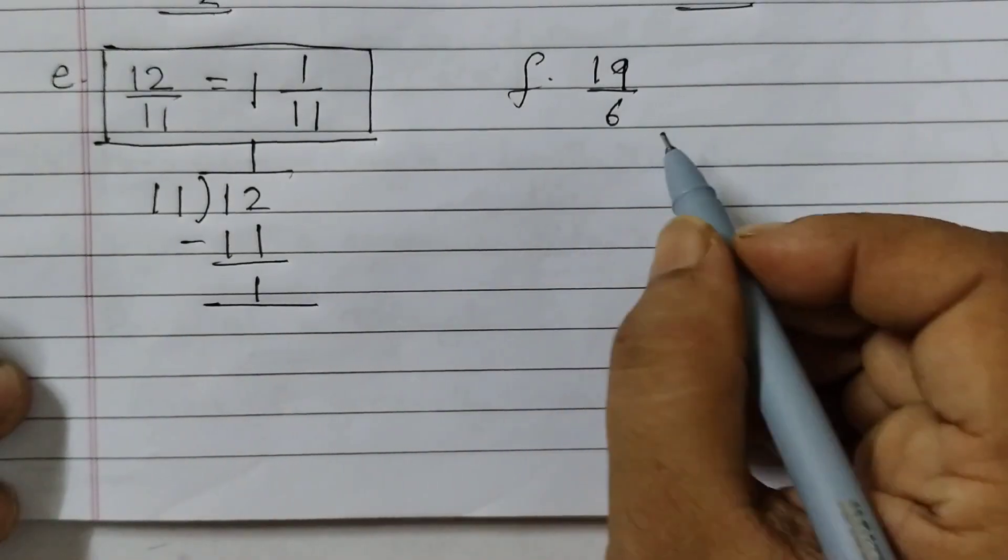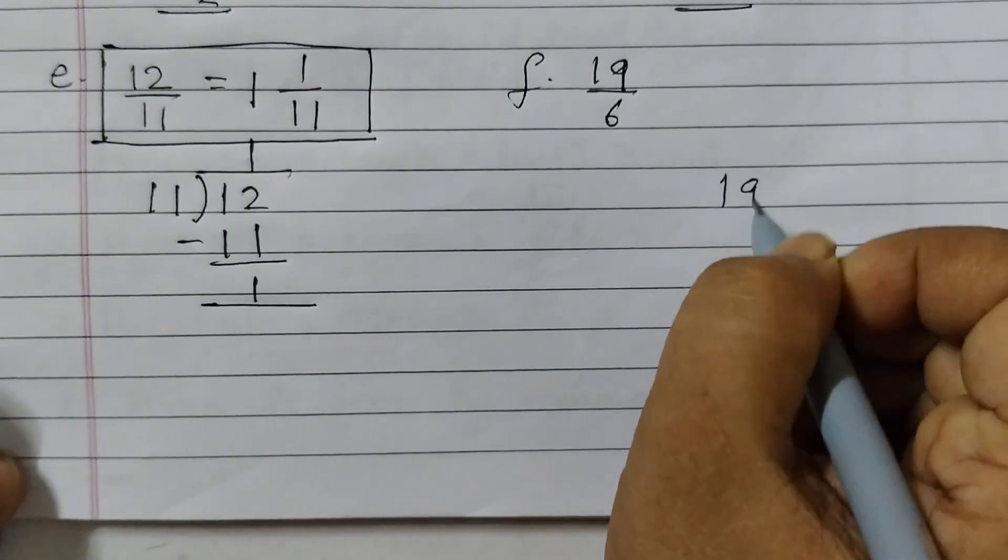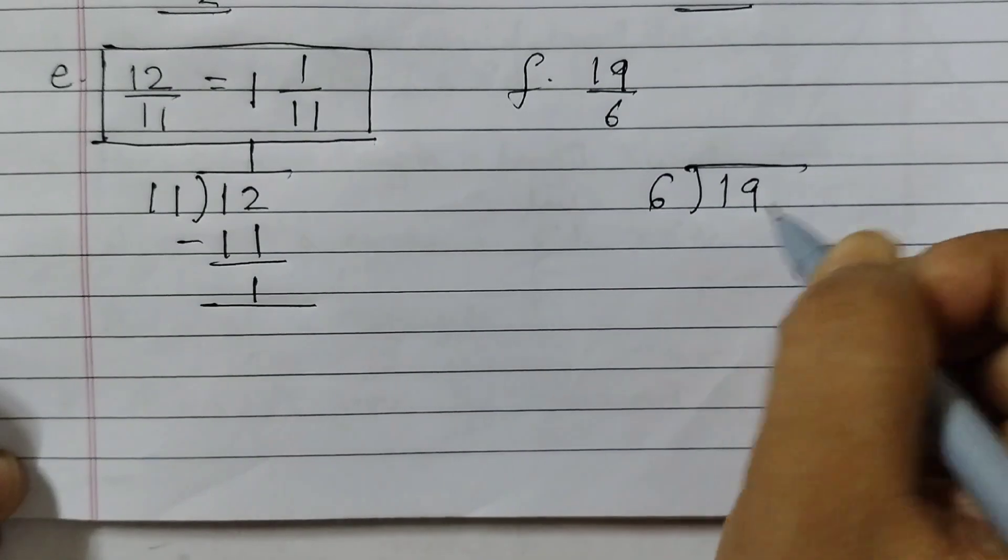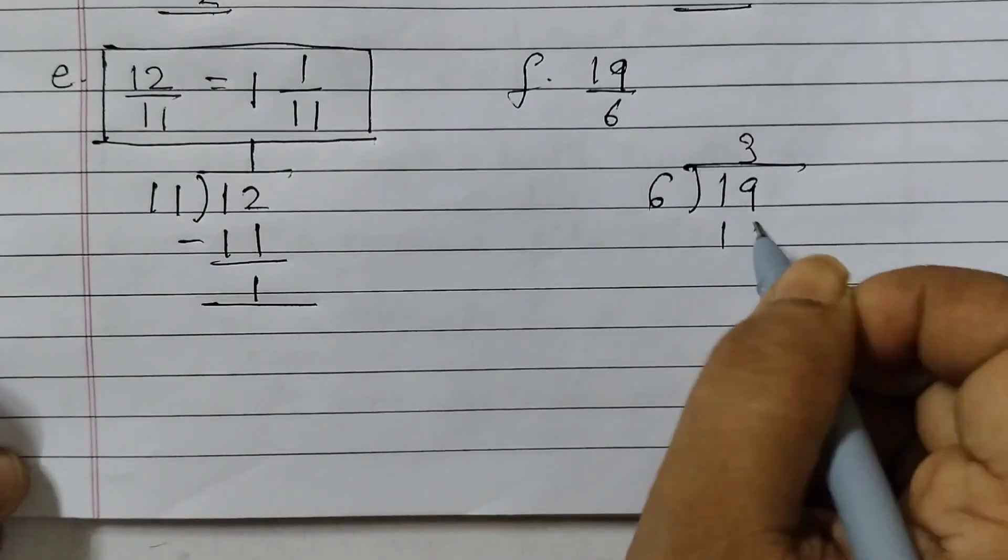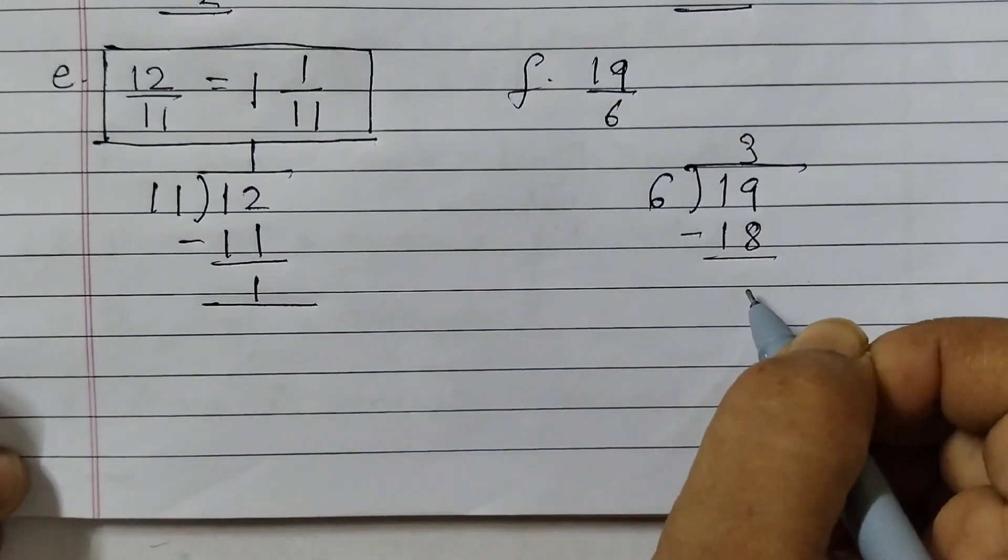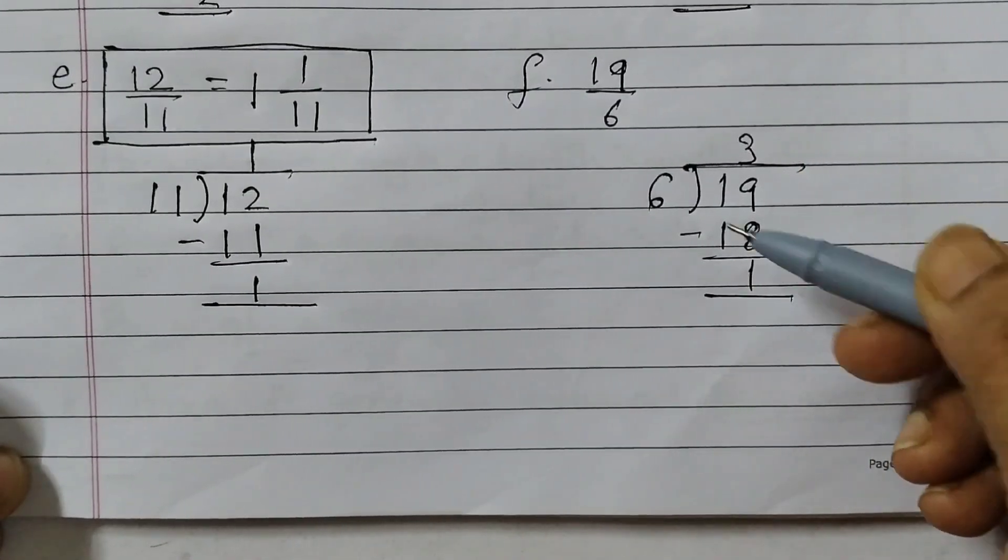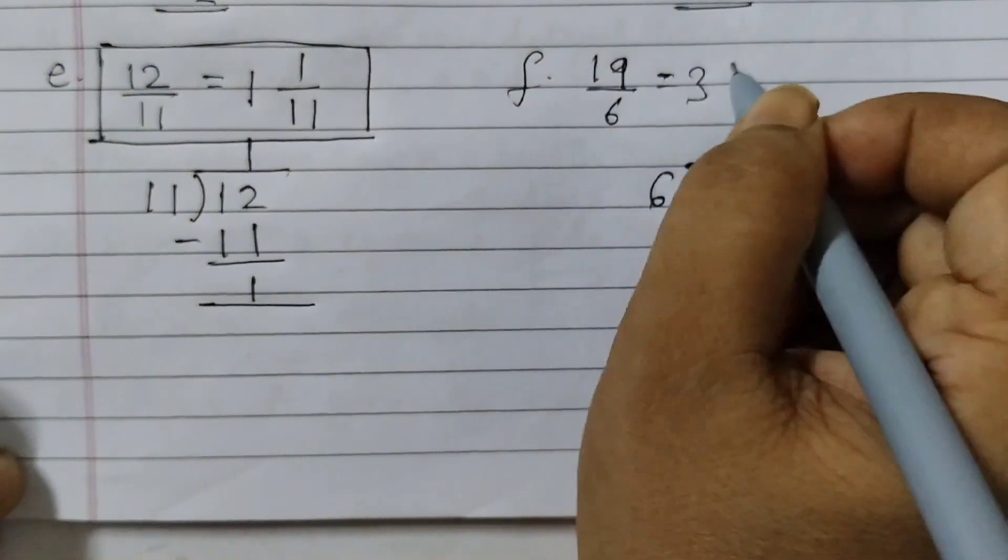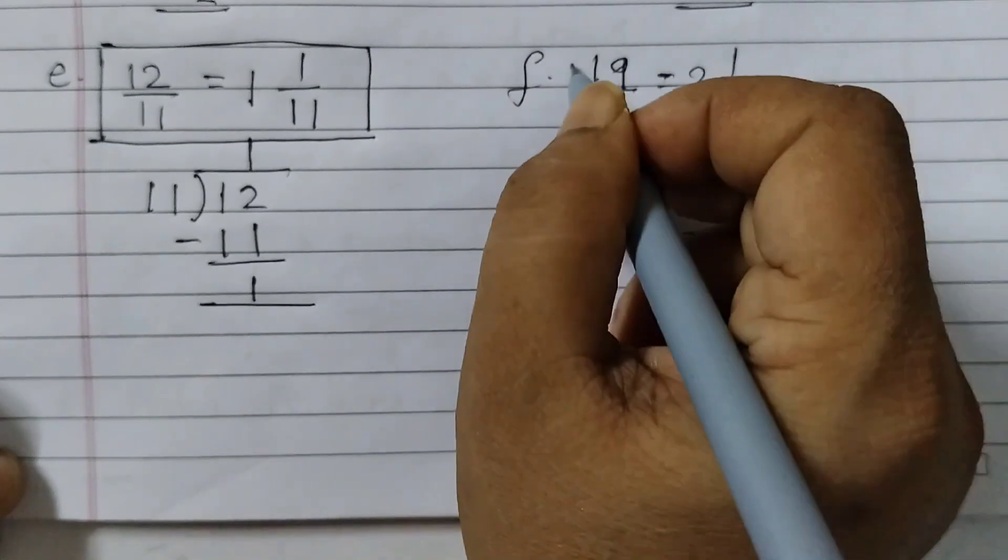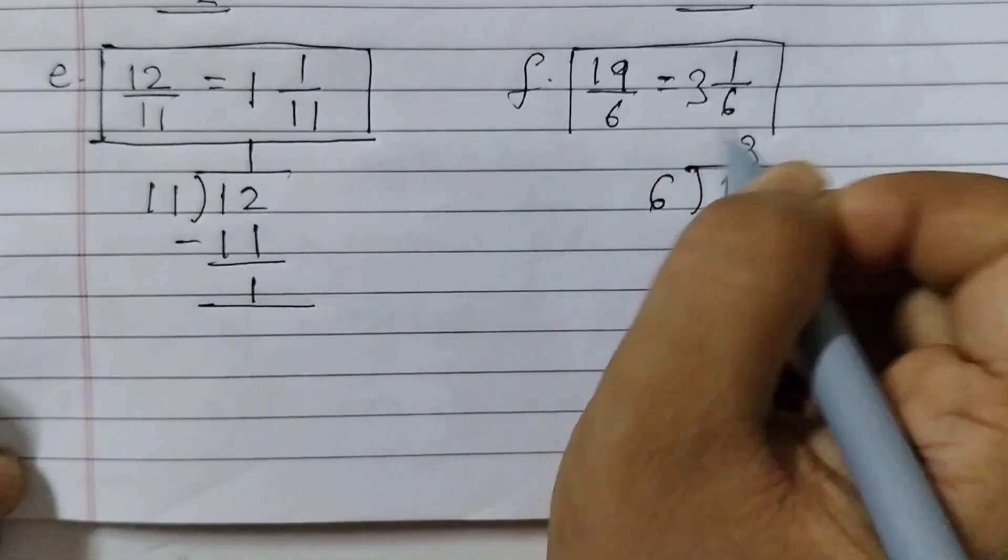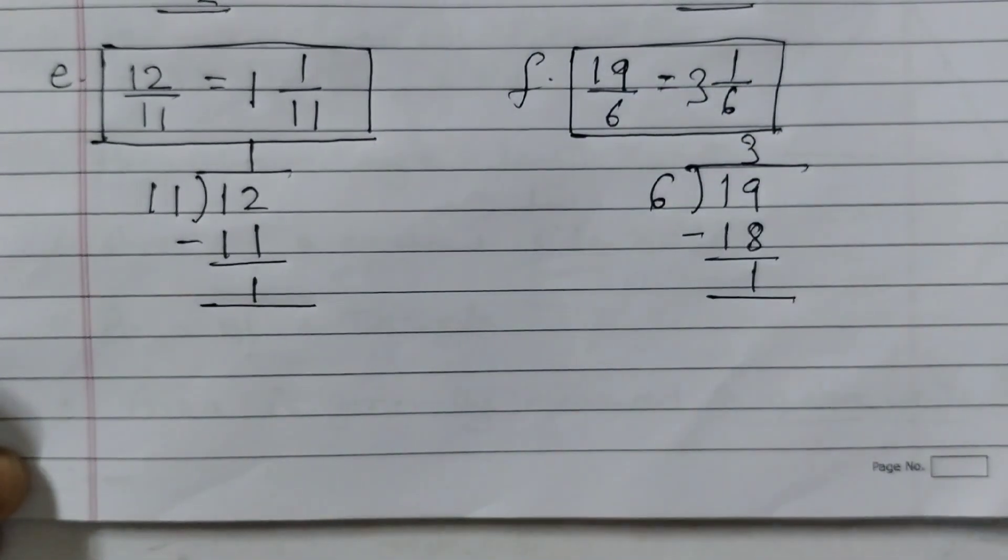The last one is 19 upon 6, 19 divided by 6. 6 threes are 18, 19 minus 18 is 1. So 3 whole and 1 sixth more, 3 whole and 1 upon 6. This is for the last one.